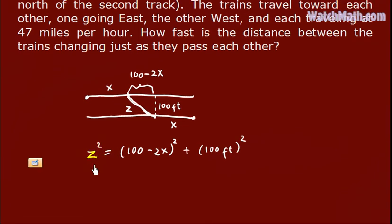Now, take the derivative with respect to t. 2z dz dt equals, using the chain rule, 2 times 100 minus 2x. Take the derivative of the inside function with respect to t, so negative 2 dx dt. And for this one, since this is a constant, the derivative is equal to zero. So we can ignore it.